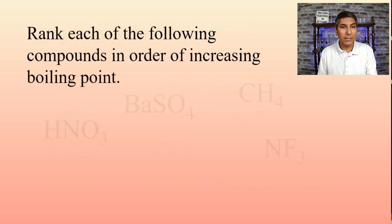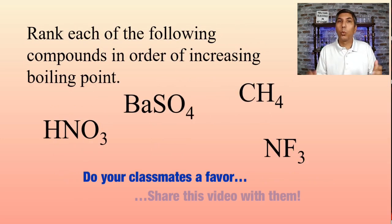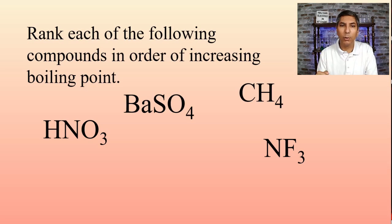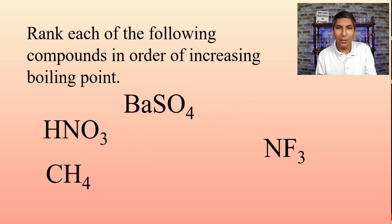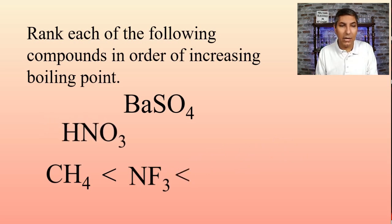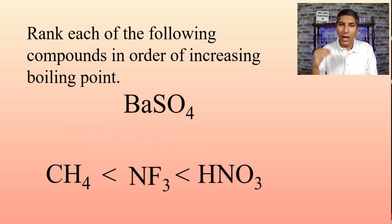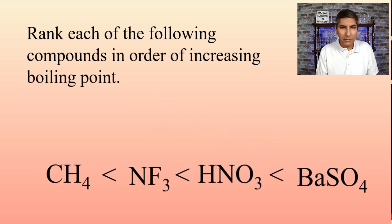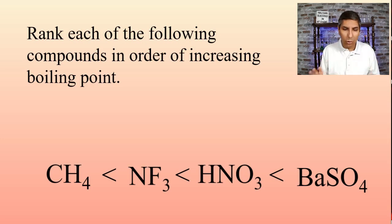Now let's rank those same four compounds in order of increasing boiling point. Lowest is CH4 — only London dispersion forces. Next is NF3 — dipole-dipole forces. Then HNO3 — hydrogen bonding. And the highest boiling point is barium sulfate — the ionic compound. We can use these forces to predict and rank boiling points with pretty good accuracy.